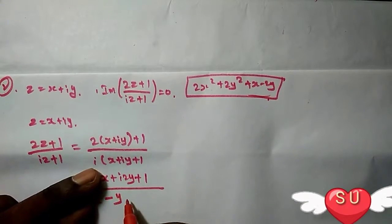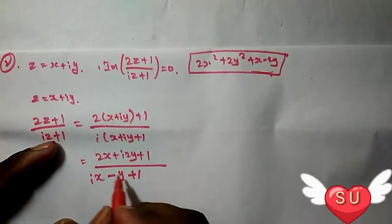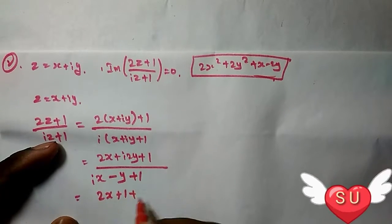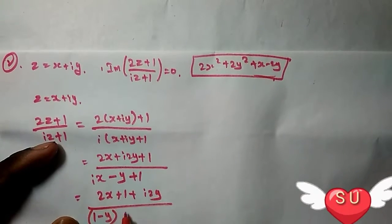To separate into real and imaginary parts, we write this as: real number (2x+1) plus i·2y, divided by (1-y) plus i·x.